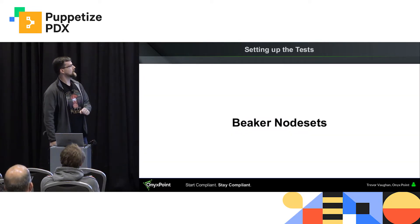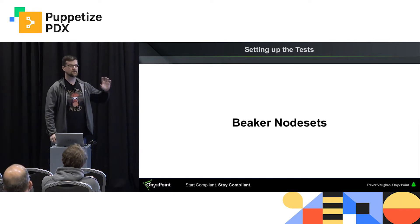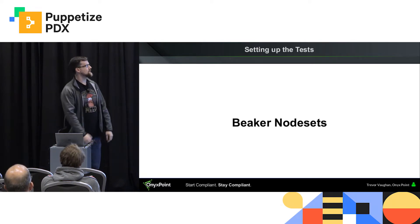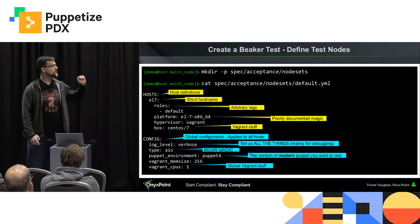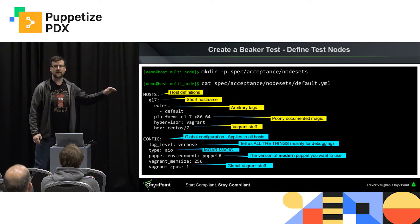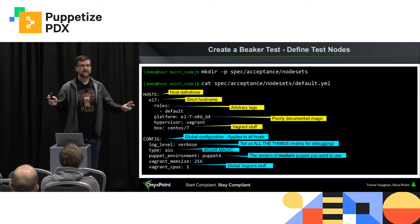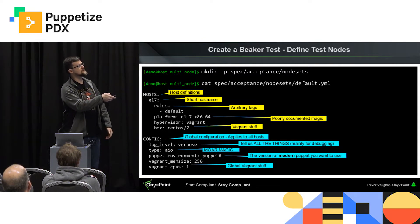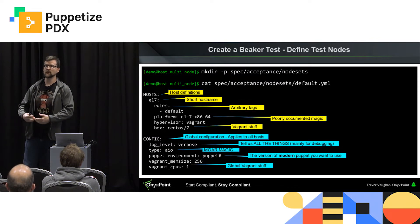Now setting up the Beaker node sets — to me this is actually one of the best features about Beaker. Beaker gives us a YAML file where we can define our node sets completely. Inside the acceptance directory, you create a nodesets directory, then create a default.yaml — this is used as your default node set if no other is defined. We define our hosts; in this case, we're giving it the short host name of EL7, a CentOS 7 system. Roles are arbitrary tags you can use to perform logic selection on your nodes during your tests — completely arbitrary, use them as you will.